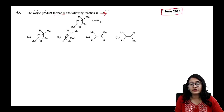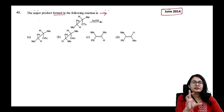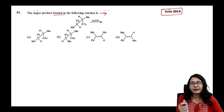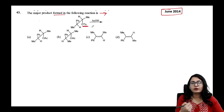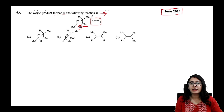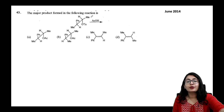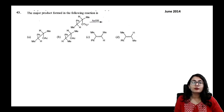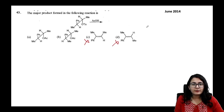You might be tempted to do elimination here because OTs is a good leaving group, but there is no elimination reagent — no heat, no base. So no elimination; we are doing NGP, which is substitution. Cancel options C and D — there is no elimination.